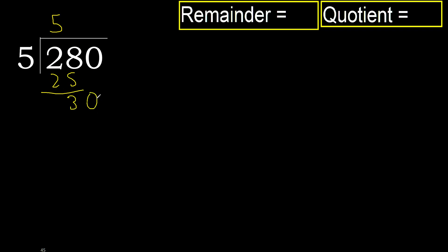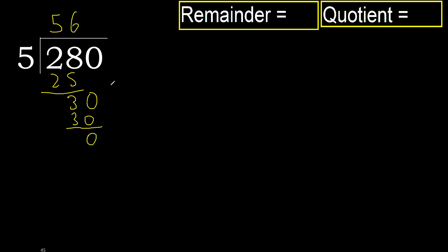30. 5 multiply by 6 is 30 — 30 is not greater. Subtract. 0, next.